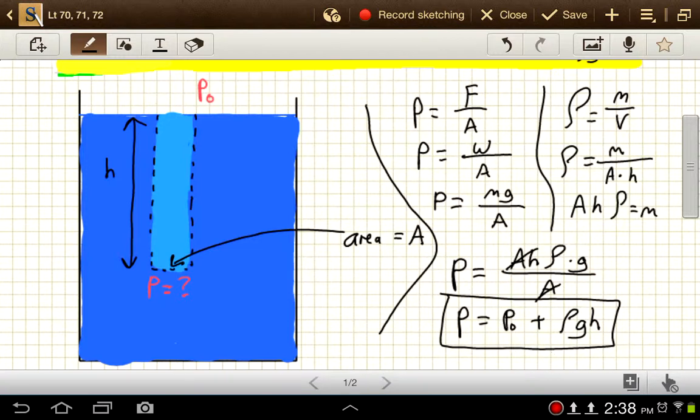So the pressure down at this point is independent of the size of the object that we're looking at, the area of the object that we're looking at. All it depends on is the density of this fluid, the amount of gravity there, and this depth, H.